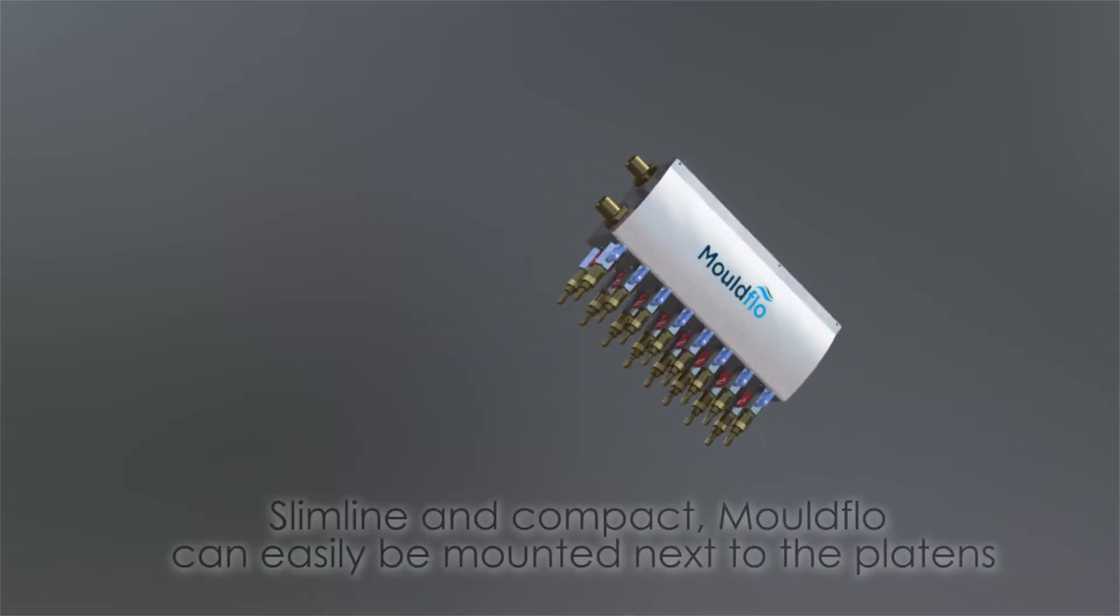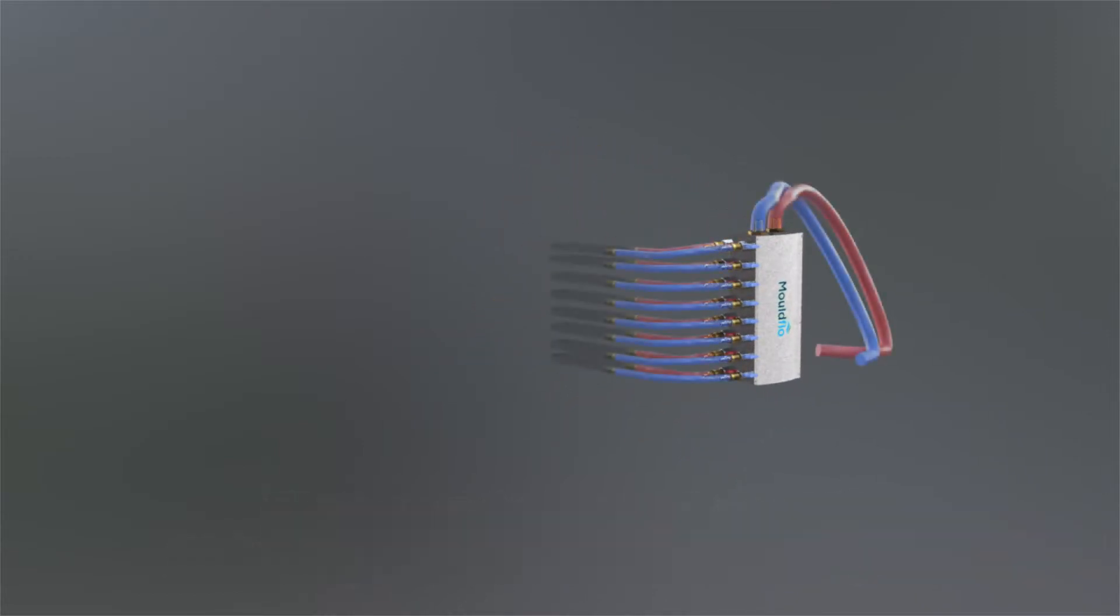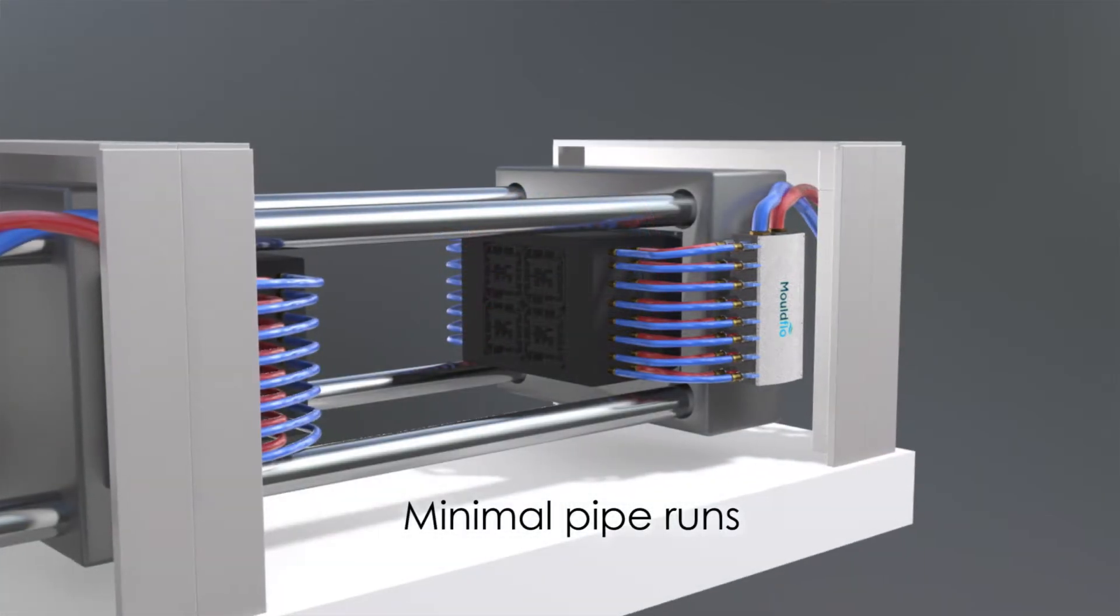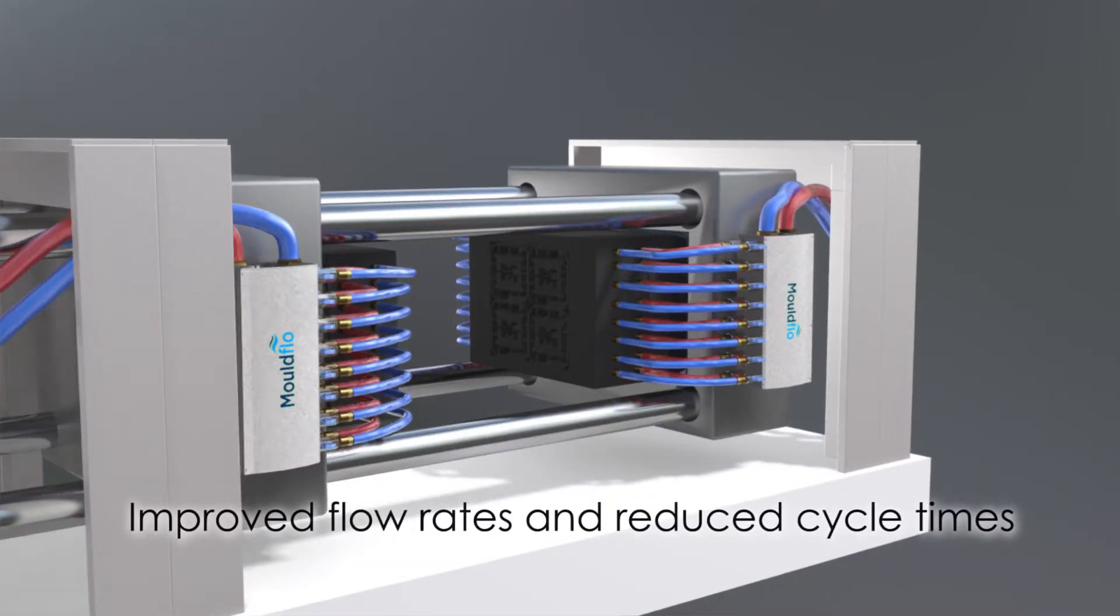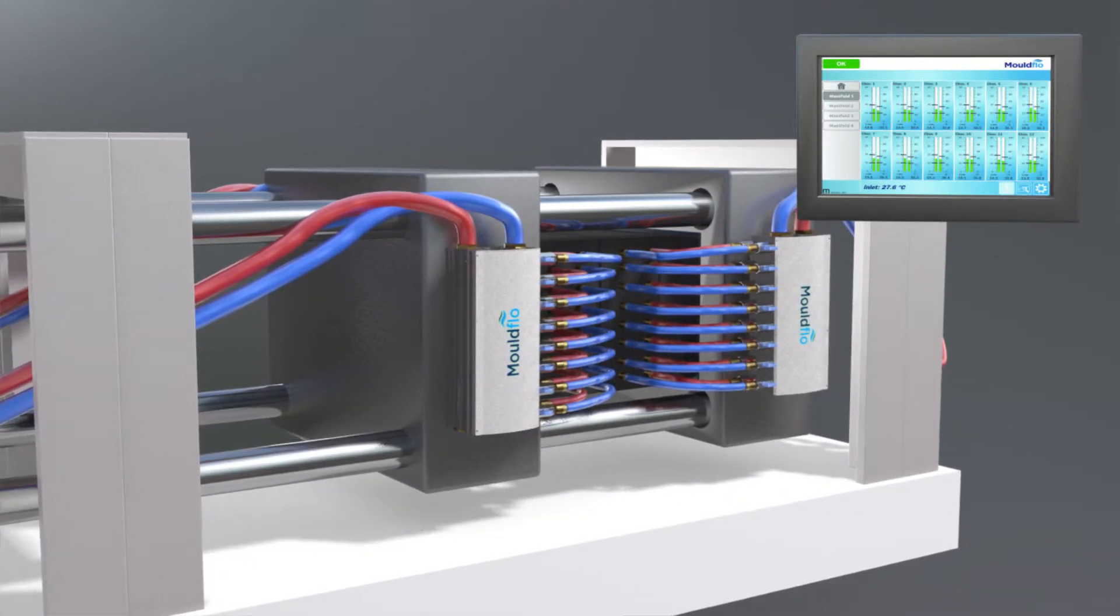The compact design enables mold flow to be mounted next to the machine, keeping the pipe runs to a minimum, improving flow rates and reducing cycle times. The remote mounted interface allows easy monitoring from a convenient location.